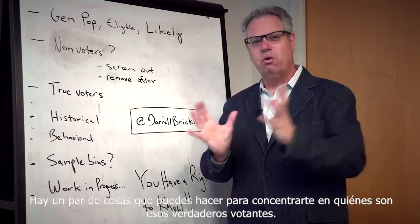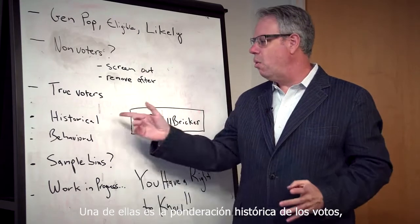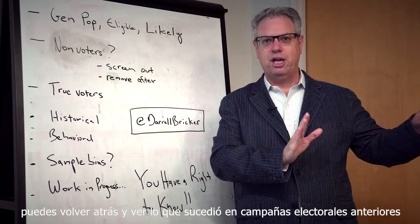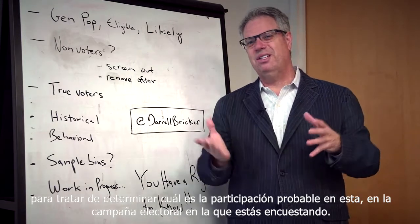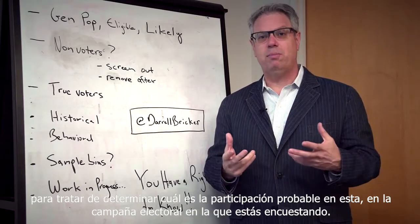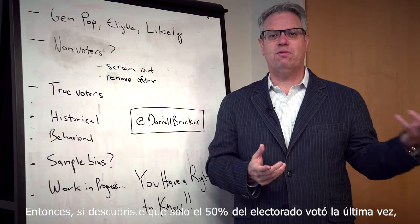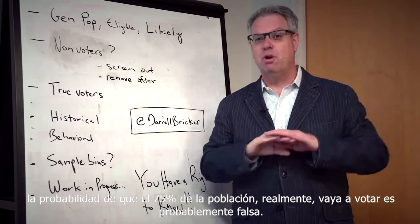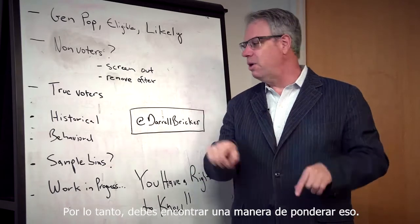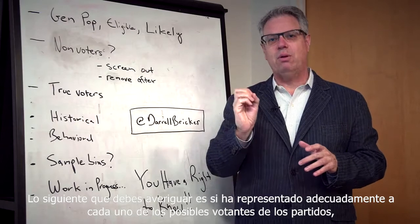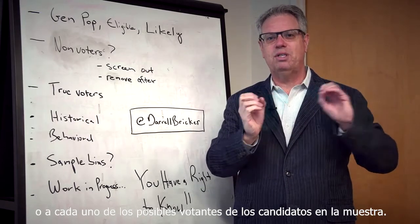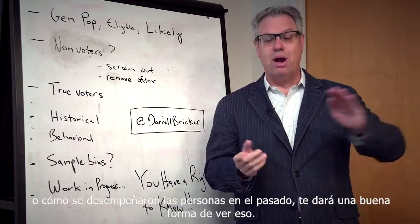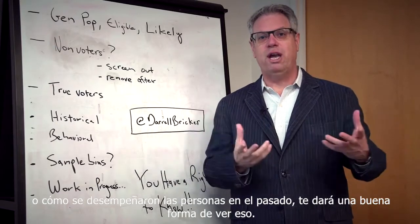There are a couple of things you can do to zero in on who those true voters are. One of them is historical vote weighting. You can go back and look at what happened in previous election campaigns to try and sort out what the likely turnout is in the election you're polling on. If only 50% of voters voted last time around, the likelihood that 75% of the population is actually going to vote is probably untrue. You also have to figure out whether you've adequately represented each party's or each candidate's likely voters in the sample — looking at how they performed in the past can help with that.